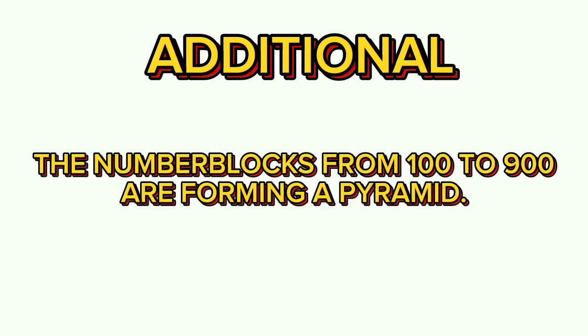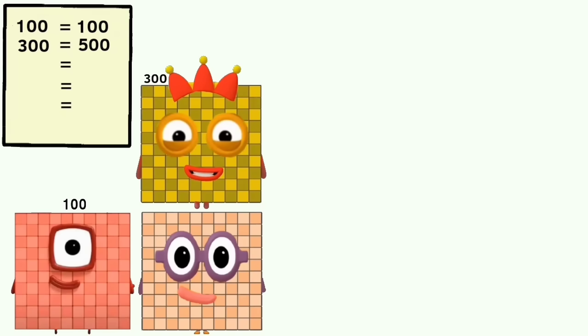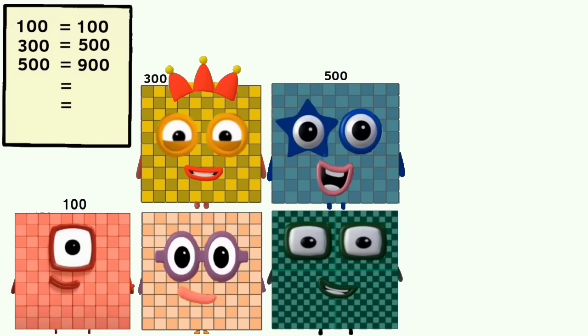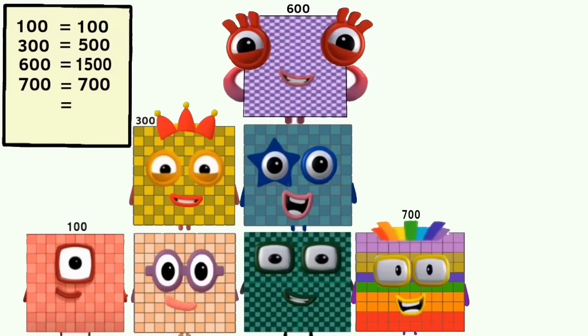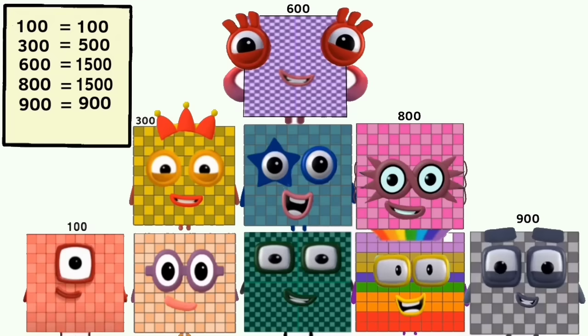The number blocks from 100 to 900 are forming a pyramid. 100 plus 200 equals 300. 400 plus 500 plus 600 equals 1,500. 700 plus 800 equals 1,500. 900 equals 900. The total is 4,500.